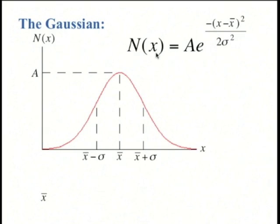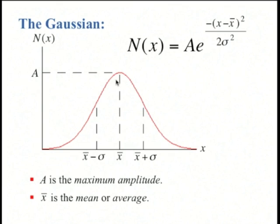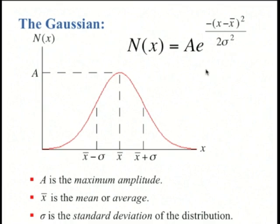The equation for the Gaussian is a times e to the power of negative (x minus x-bar) squared divided by 2 sigma squared. Here's what that curve looks like. a is the maximum amplitude of the curve, x-bar is the mean or average, and sigma is the standard deviation.